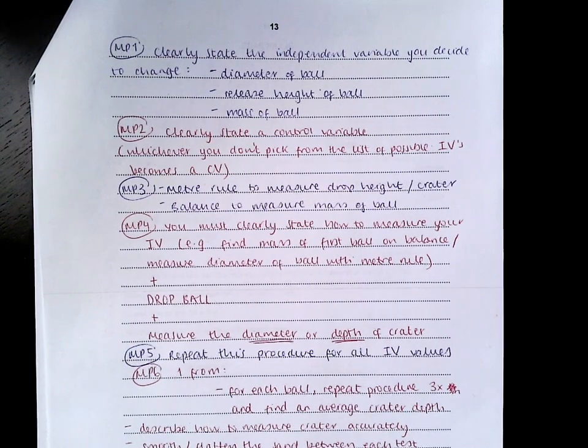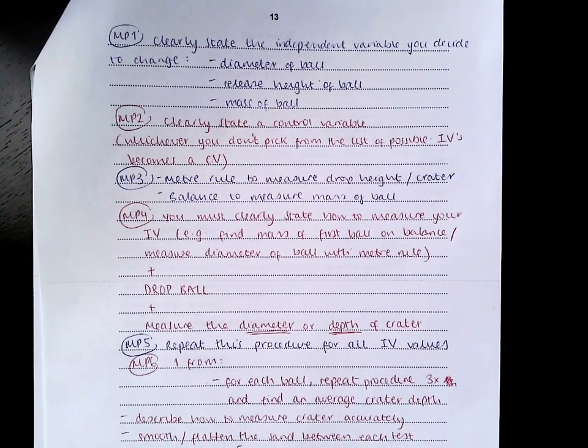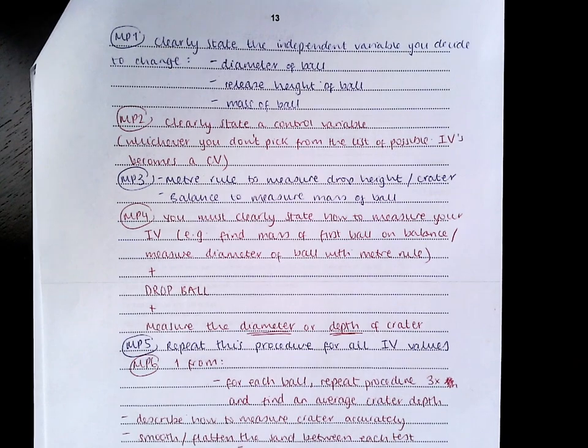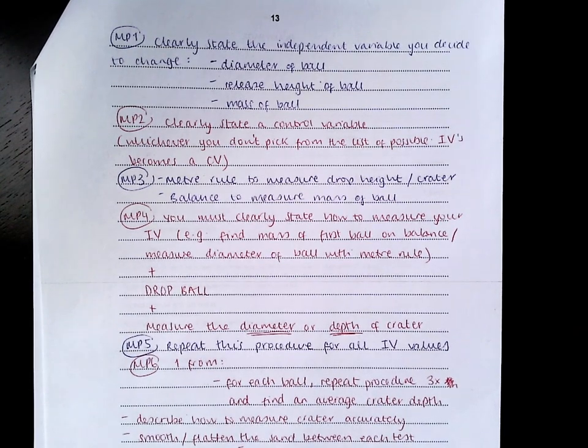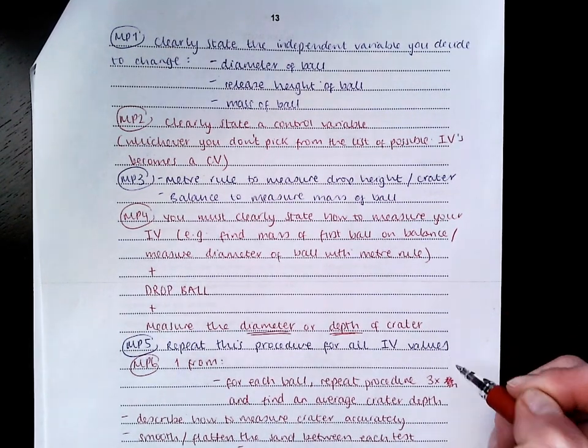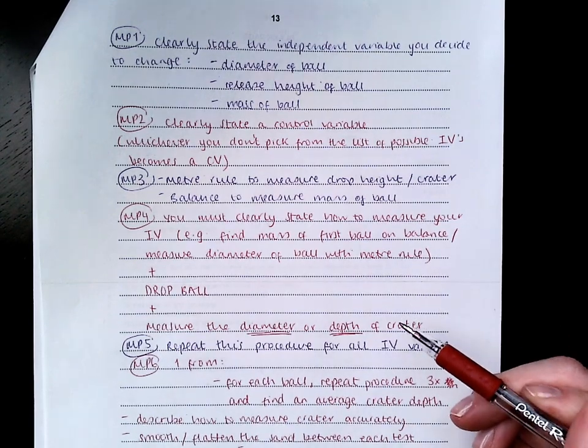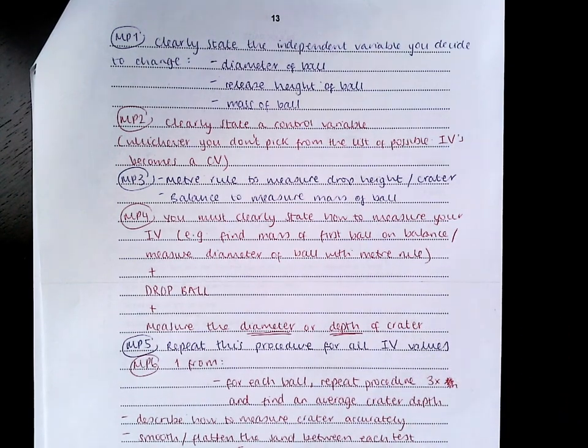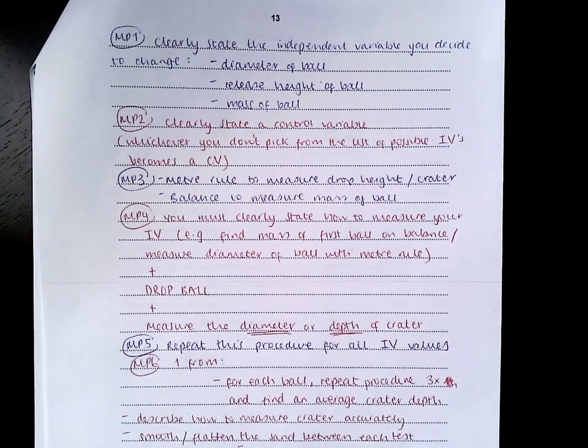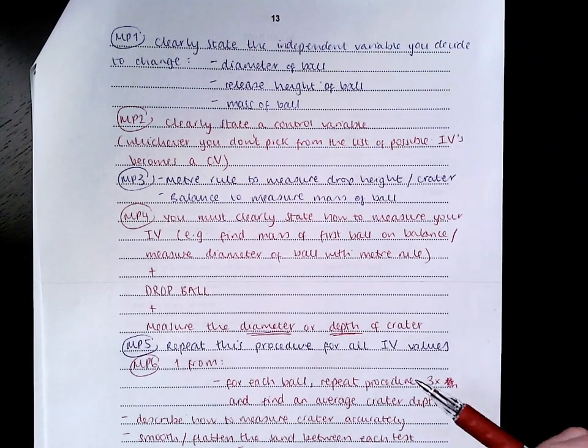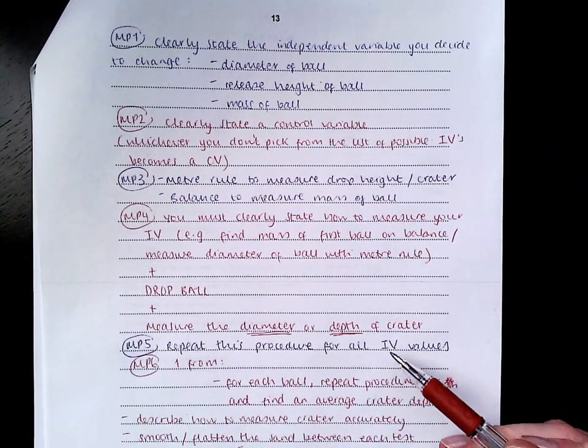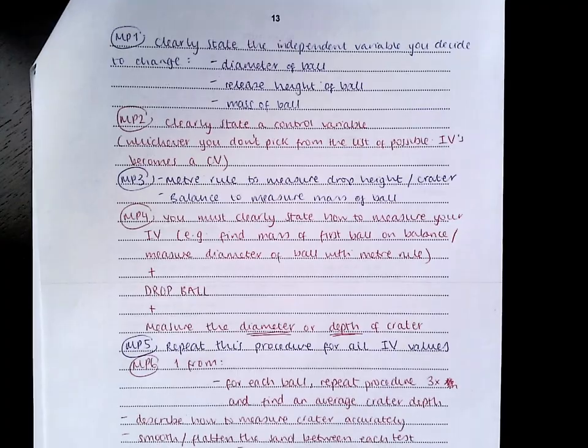Mark point five comes from saying, repeat all of this, but for my other independent variable values. It might say something like, repeat these steps for the balls that have different masses or balls of different diameter. It's repeating the procedure for your other independent variable values.